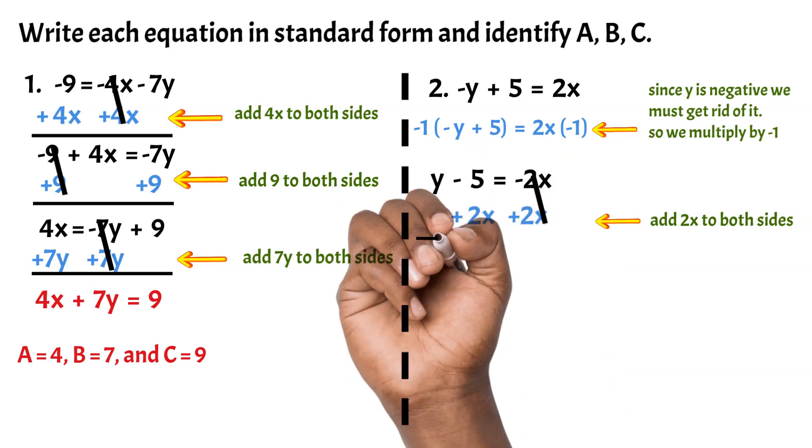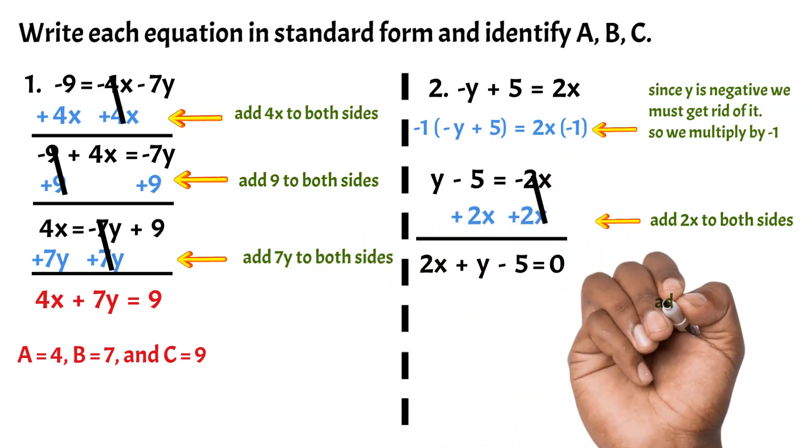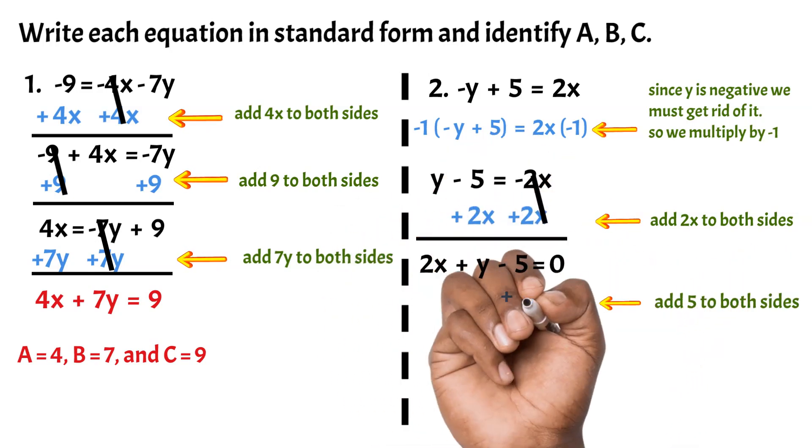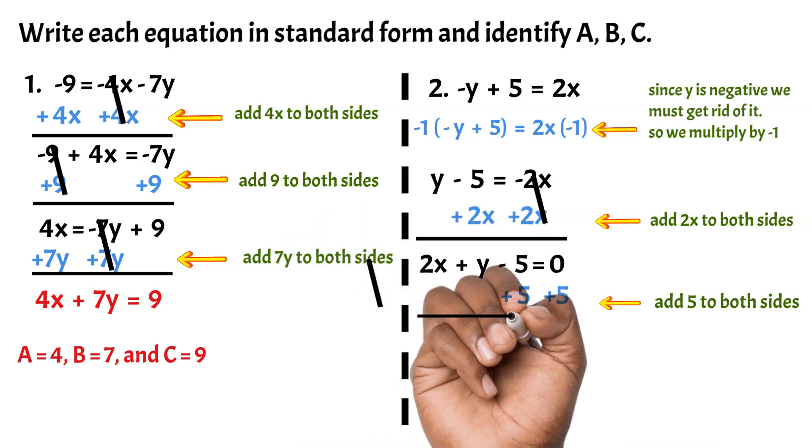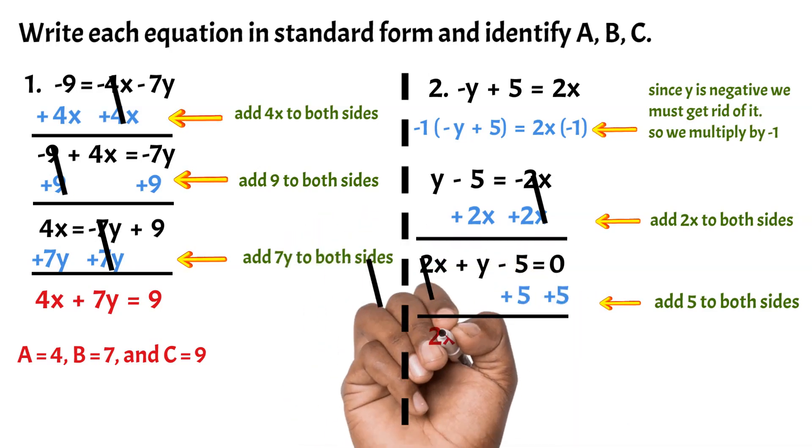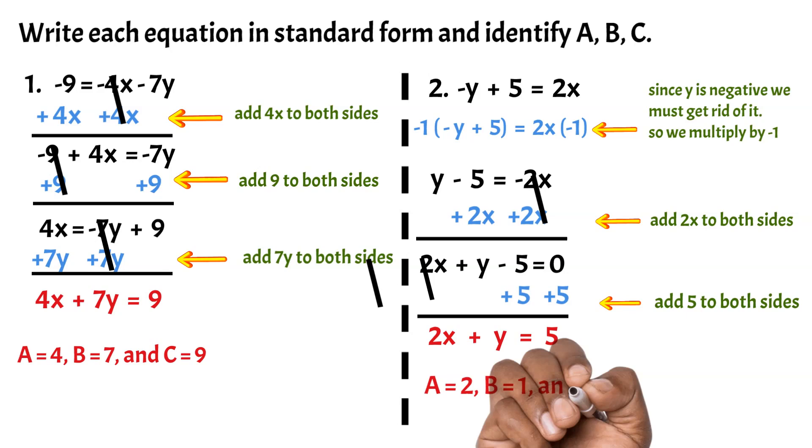Next we add 2x to both sides, we get 2x + y - 5 = 0. Now add 5 to both sides and we get 2x + y = 5. It's in standard form now, and A equals 2, B equals 1, and C equals 5.